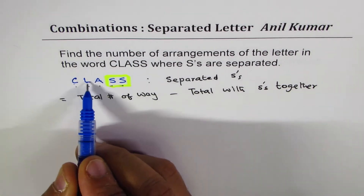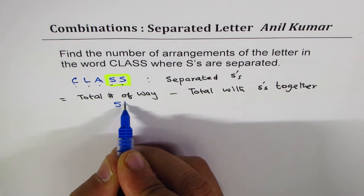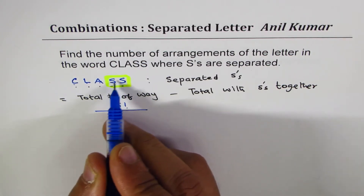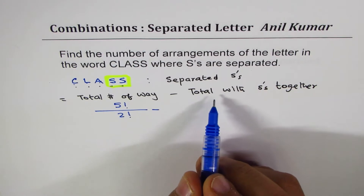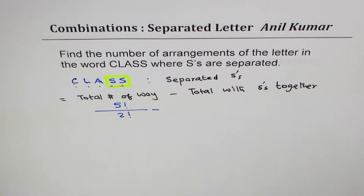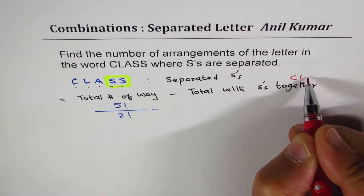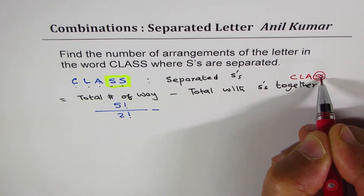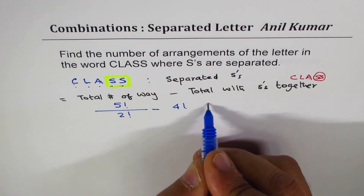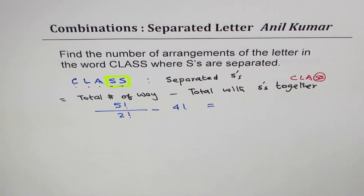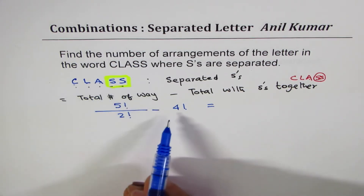Total number of ways to arrange C-L-A-S-S is five factorial divided by two factorial (since S's are repeated), which is 60. When S's are together, we treat them as one unit, giving us four letters: C-L-A-[SS], arranged in four factorial = 24 ways. So separated arrangements = 60 minus 24 = 36. This is the general subtraction method, and it works here because there are only two S's.